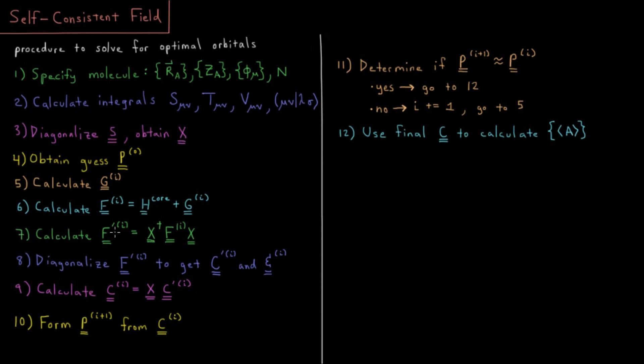Step seven, using our transformation matrix X, we're going to diagonalize the Fock matrix. F prime is X dagger F X. Step eight is we are going to diagonalize F prime, or sorry, we're transforming the Fock matrix using there.